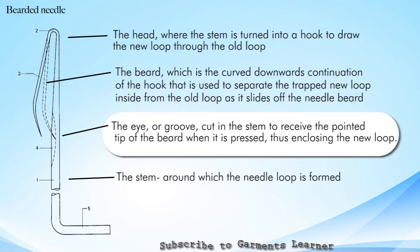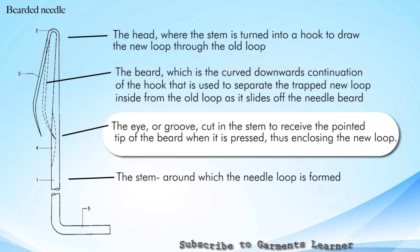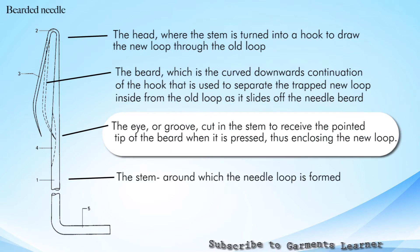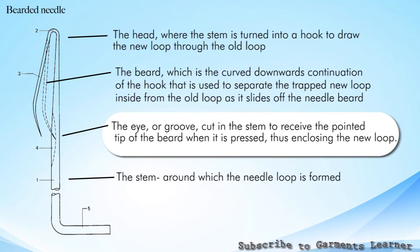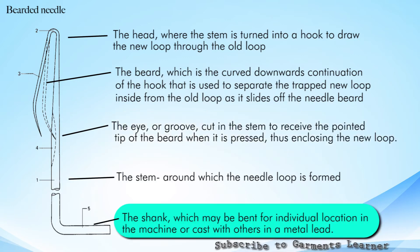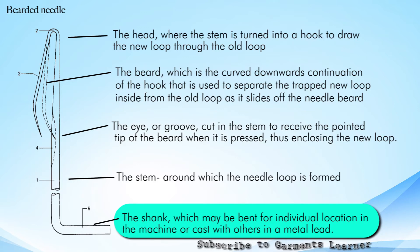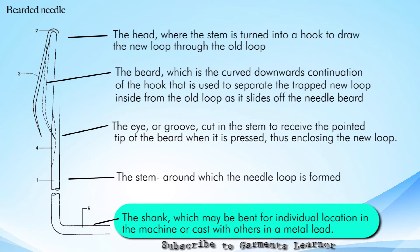The eye or groove cut in the stem to receive the pointed tip of the beard when it is pressed, thus enclosing the new loop; and the shank, which may be bent for individual location in the machine or cast with others in a metal lead.